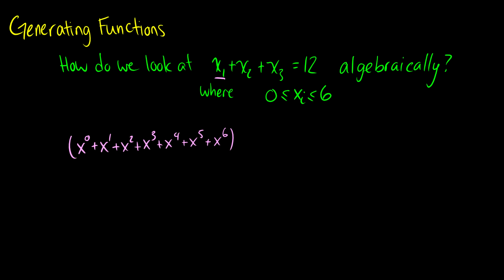So this is x1, because it has to be between zero and six. We let the powers equal that number, and then we do it the same for the second and third variables — we cube that because we're doing the same thing three times. We want the number of ways to get to x to the 12, so we want the coefficient of x12. Say we have x3 times x4 times x5, that's the same as three plus four plus five, and x12 is going to have all the possible combinations of getting there. So that answers how many ways there are to solve x1 plus x2 plus x3 equals 12 where all x's are between zero and six.